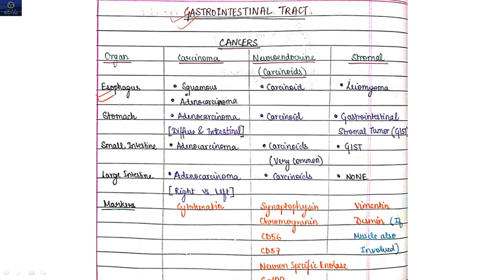First is esophagus: we have to study squamous carcinoma and adenocarcinoma. For stomach: adenocarcinoma which is two types, intestinal and diffuse. Then carcinoid and GIST - gastrointestinal stromal tumor. In small intestine: adenocarcinoma, carcinoid, and GIST. In large intestine: adenocarcinoma and carcinoid.